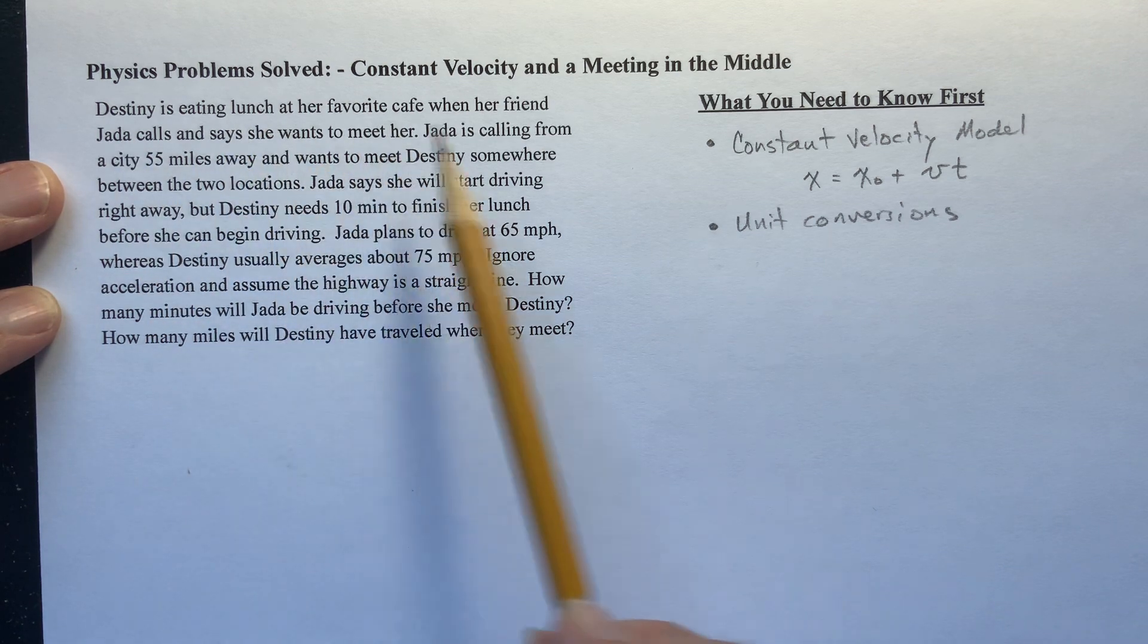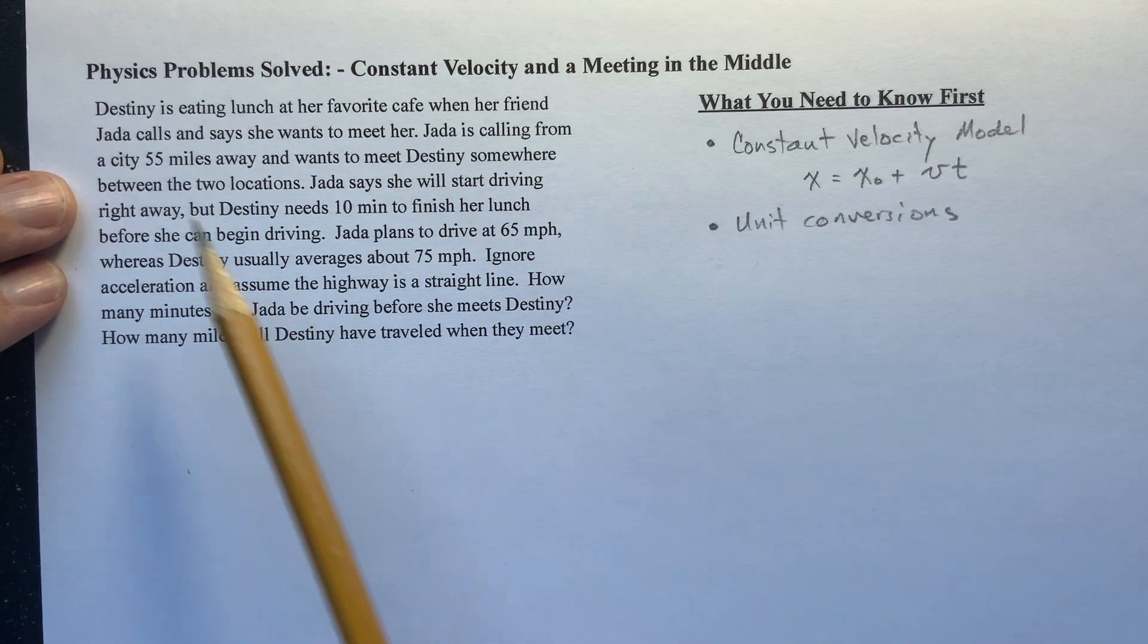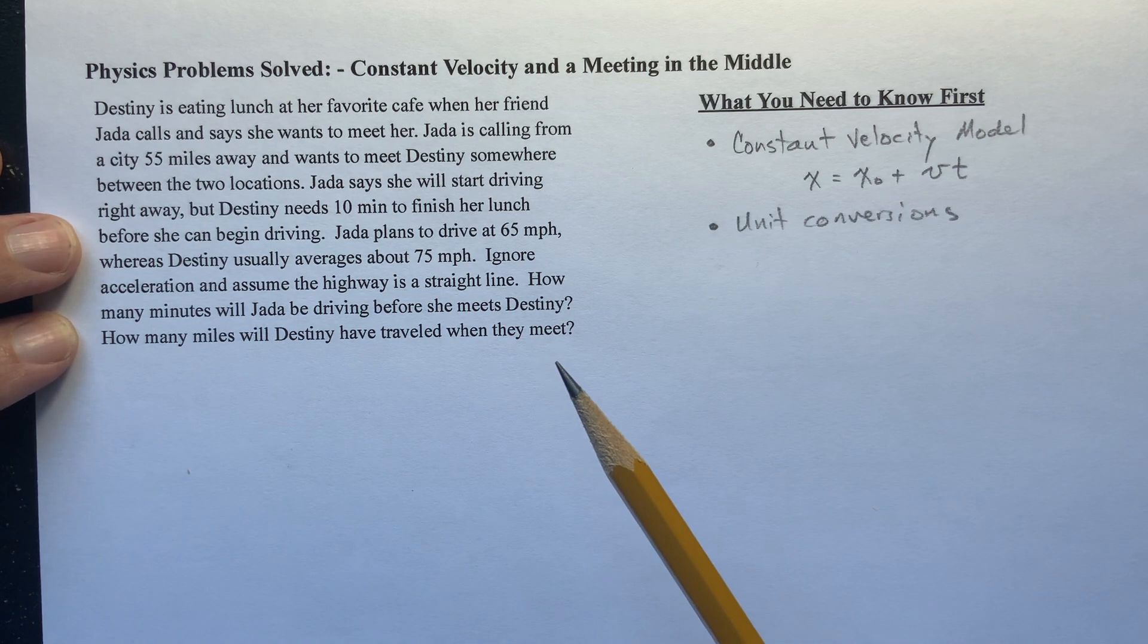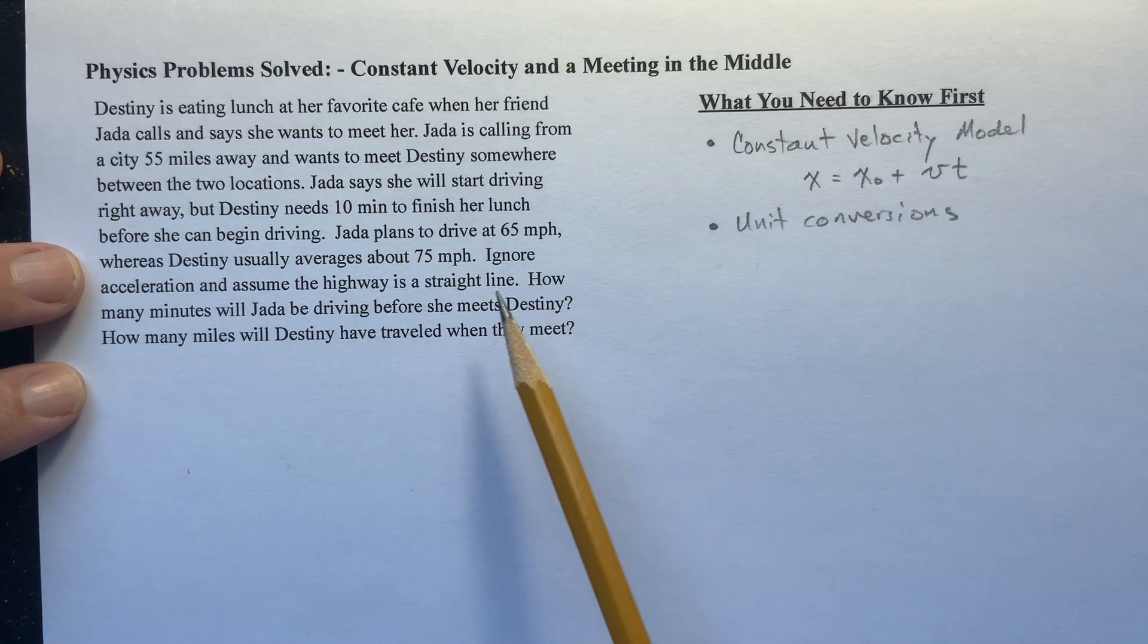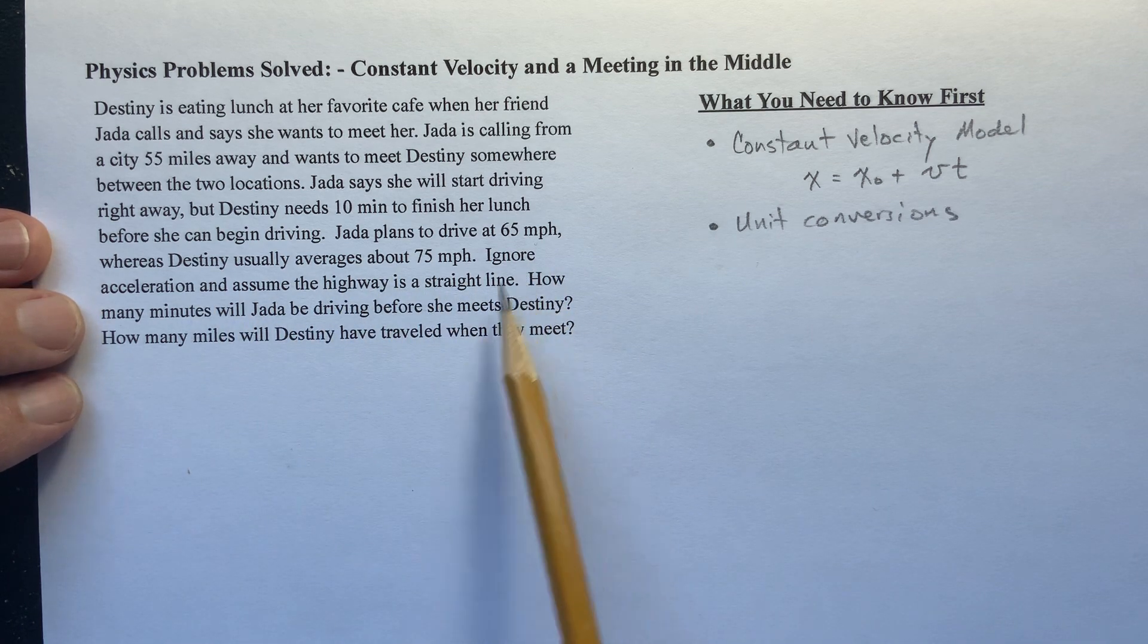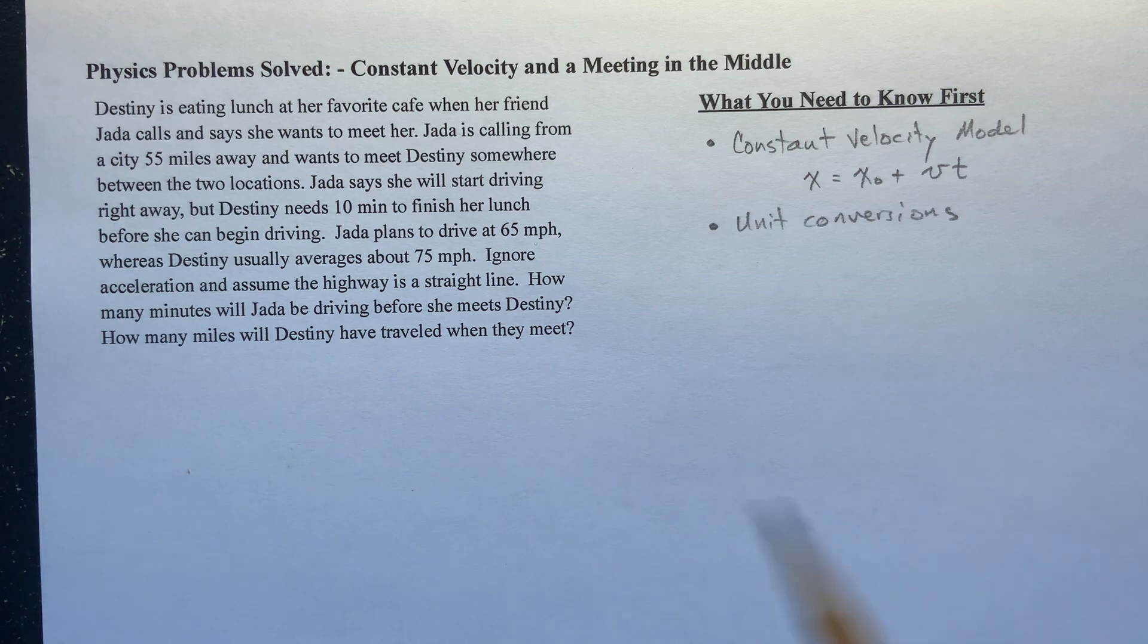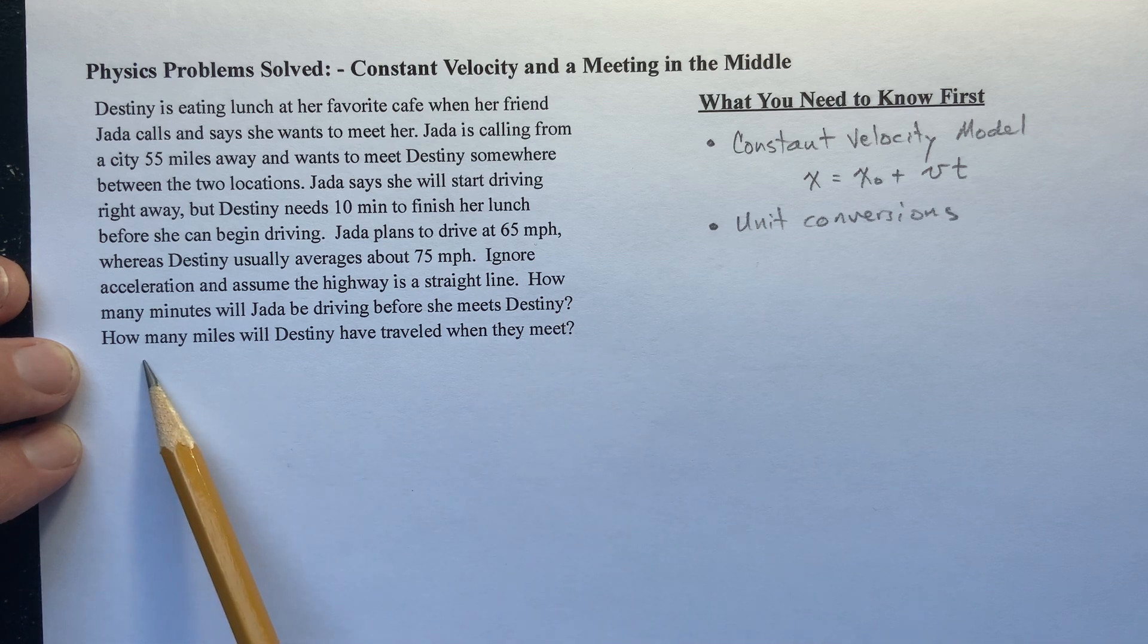Let's read the problem. Destiny is eating lunch at her favorite cafe when her friend Jada calls and says she wants to meet her. Jada is calling from a city 55 miles away and wants to meet Destiny somewhere between the two locations. Jada says she will start driving right away but Destiny needs 10 minutes because that's how Destiny is. She needs 10 minutes to finish her lunch before she can begin driving. Jada begins to drive at 65 miles an hour whereas Destiny usually averages about 75. Ignore acceleration and assume the highway is a straight line. So that's just like we're going to simplify this. How many minutes will Jada be driving before she meets Destiny? And how many miles will Destiny have traveled when they meet?